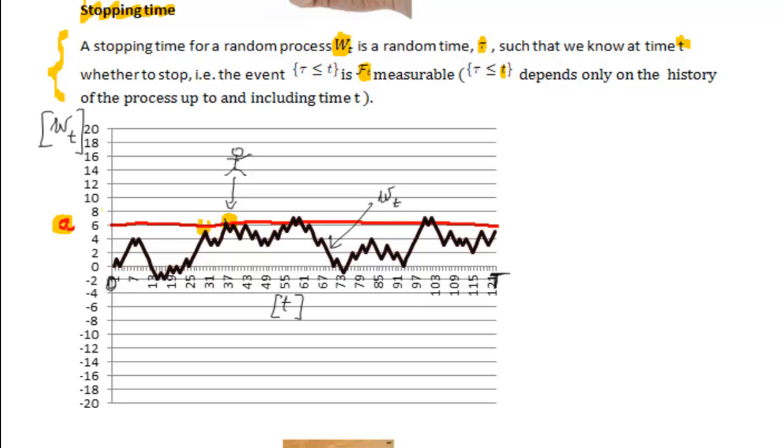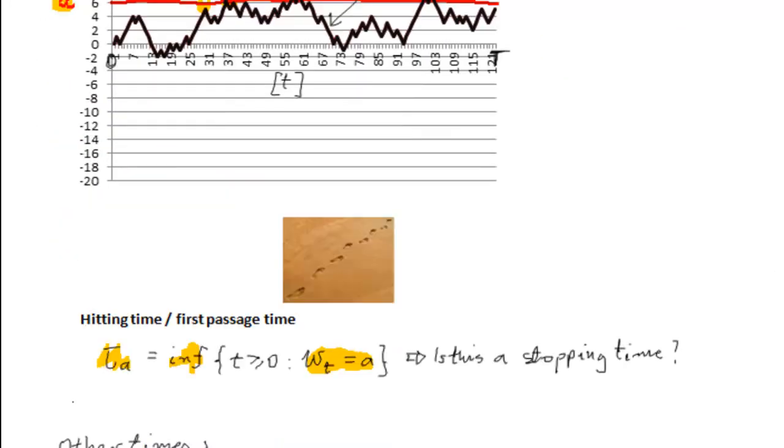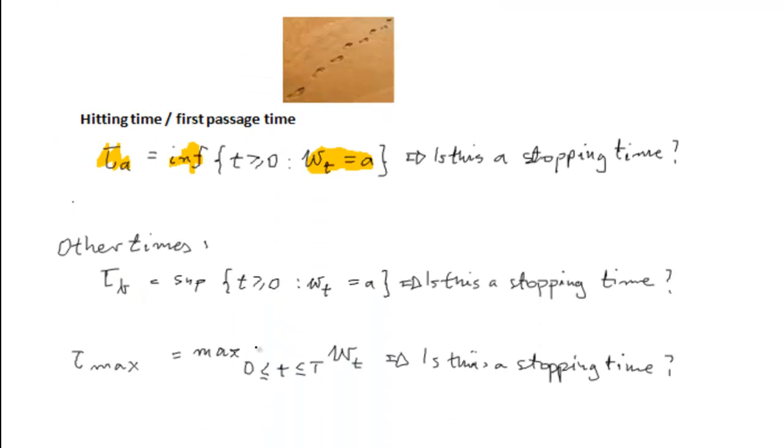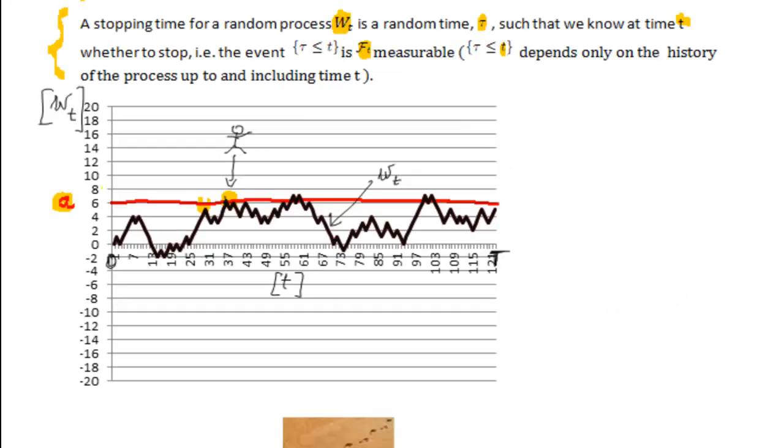Now, let's see other examples of times. For instance, let's define tau B as the last time that the process hits level A. The question is, is this a stopping time?